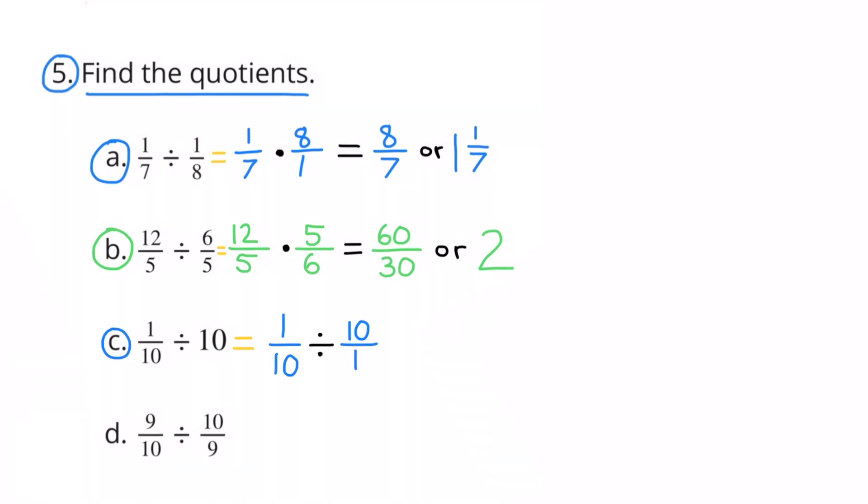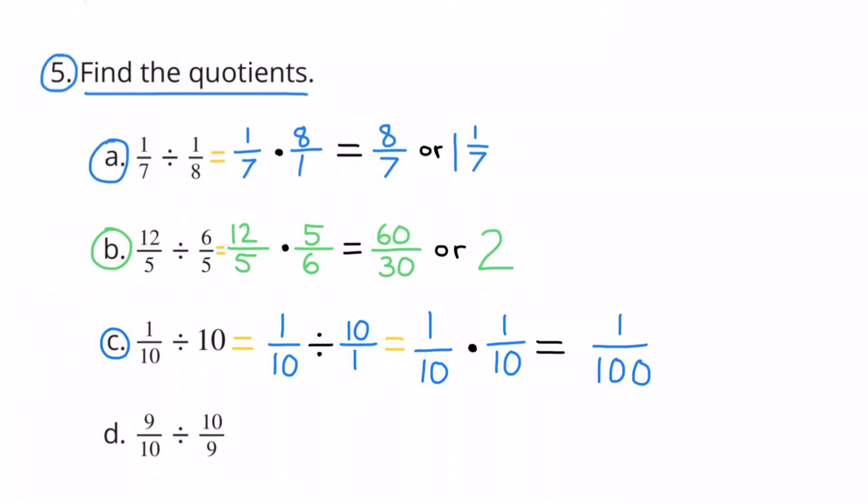5c. One-tenth divided by ten. That equals one-tenth divided by ten over one. And one-tenth divided by ten over one equals one-tenth times the reciprocal of ten over one, which is one over ten. So one-tenth times one-tenth equals one-hundredth, or one over a hundredth.